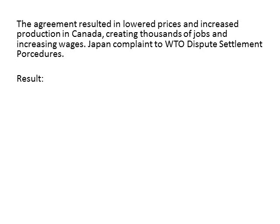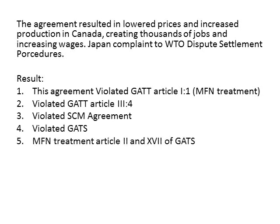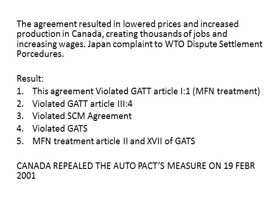The panel issued its report in February 2000, and the Appellate Body issued its report in May. Both reports upheld virtually all of the Japanese argument, finding that the measure: (1) violated GATT Article I:1, MFN treatment; (2) violated GATT Article III:4, national treatment; (3) violated the SCM Agreement; (4) violated Article 17 of the GATT's national treatment provisions; and (5) that the duty waiver violated Article 2 of the TRIMS Agreement's MFN treatment and Article 17 national treatment provisions — however, this last finding was overturned by the Appellate Body. Canada repealed the Auto Pact's measures on February 19, 2001.